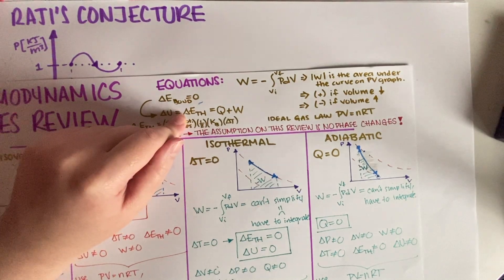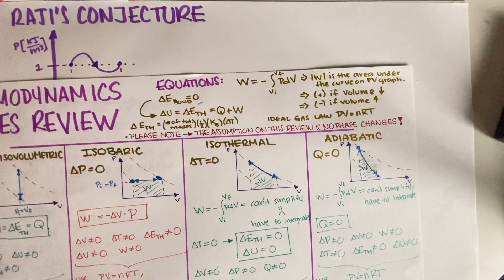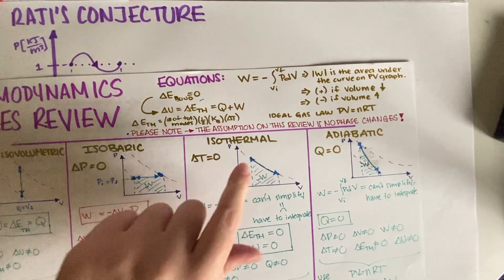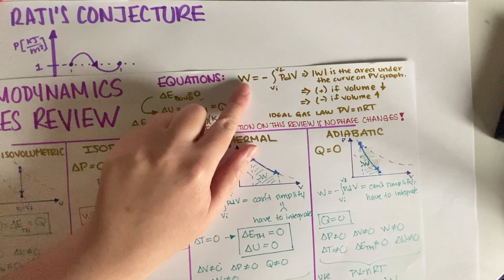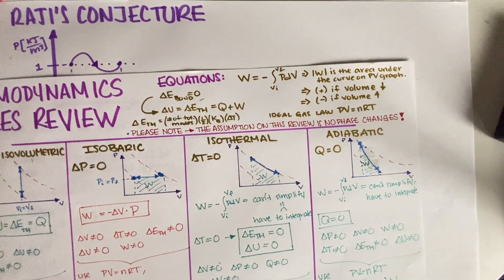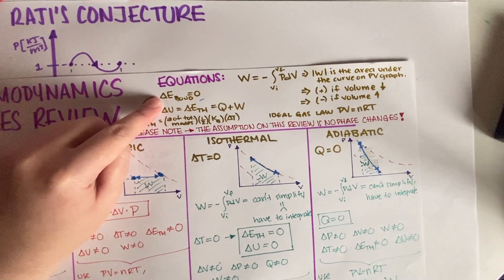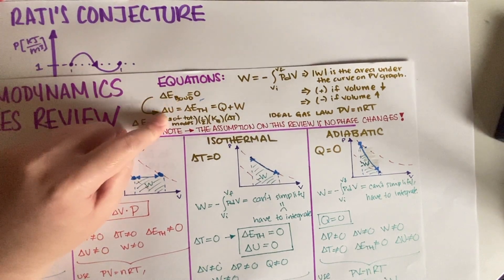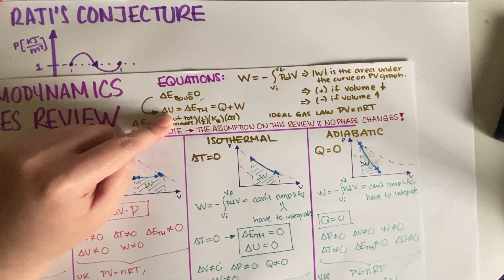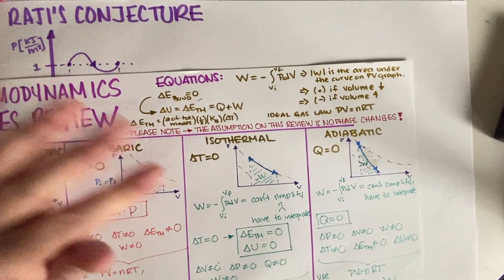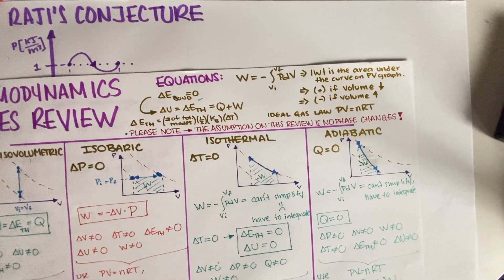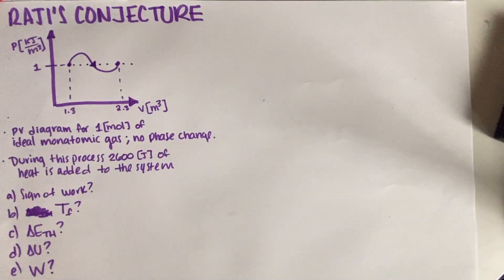And why can we actually use these equations? Well, because this is an ideal gas, so we can use the ideal gas law. This is a definition, so that's always something we can use. And there are no phase changes, which means that E-bond is equal to zero, which means that we can use this approximation right here. And then, this is also a definition that we have, so we could always use that regardless. All right, so let's get started.